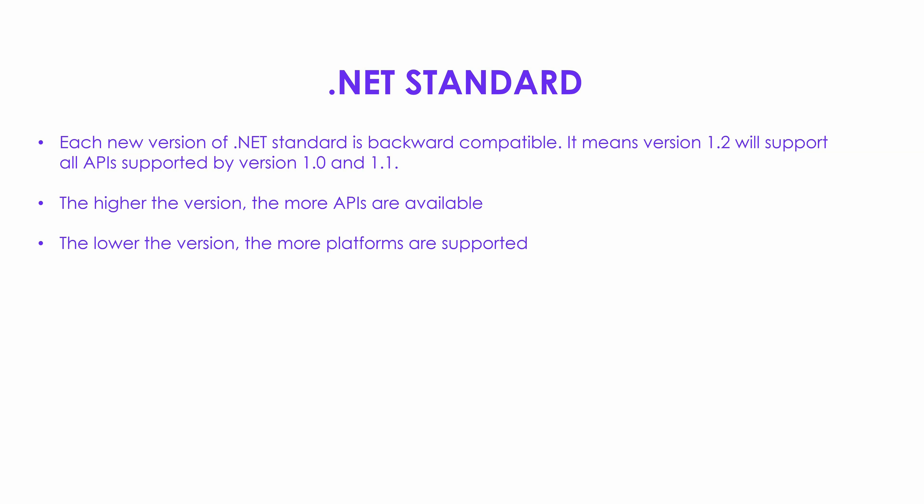As a library developer, you will face the question of which .NET standard version you should target. To answer this question, you have to first decide whether you want to use newer APIs in your library or you want to make your library more portable. The general rule of thumb is: the higher the version, the more APIs are available, because with every new .NET standard release Microsoft is adding more and more APIs. The lower the version, the more platforms are supported. So if you want to target more platforms, you should probably pick a lower version of .NET standard.